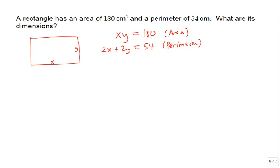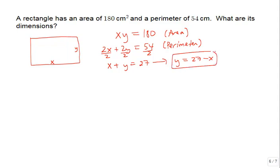All terms in the perimeter equation are divisible by 2, so dividing through gives x plus y equals 27. This makes it simple to solve for y: y equals 27 minus x. Now we substitute this into the area formula.